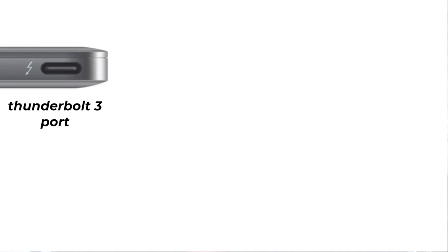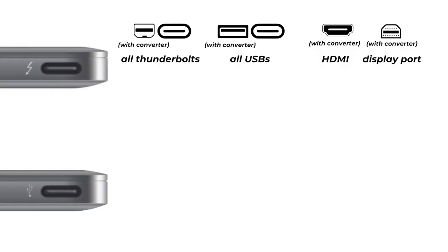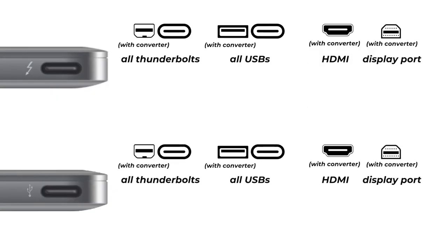I was just editing the video and realized I missed something. If you see a Thunderbolt logo next to the port, that means it'll accept everything — Thunderbolt 1, Thunderbolt 2, or Thunderbolt 3, of course, because it's a Thunderbolt 3 port. It'll also accept USB, HDMI, and DisplayPort with a converter. On the flip side, if you have a USB logo, it'll accept HDMI, DisplayPort, and so on — minus Thunderbolt.